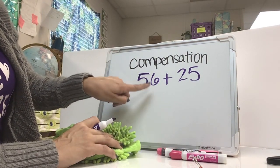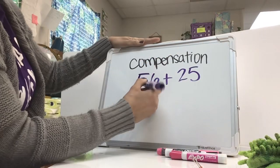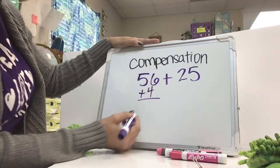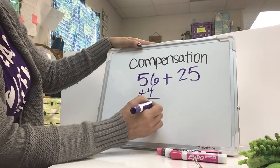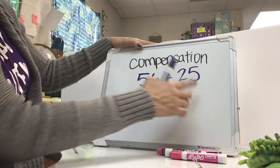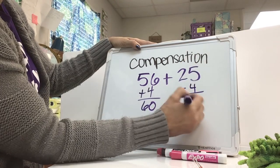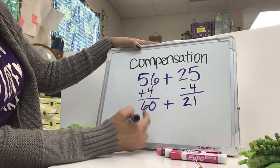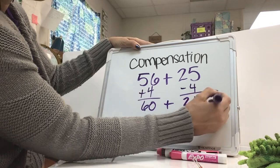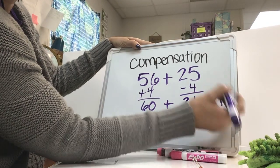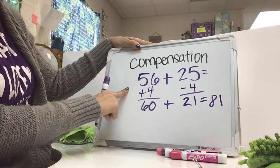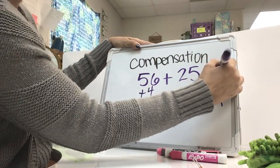So I'm going to show if I added plus 4 on this side. So 56 plus 4 is 60. I put 4 over here, so on this side I'm going to subtract 4. 25 minus 4 is 21. If I add 60 plus 21, it equals up to be 81. So 56 plus 25 is 81.